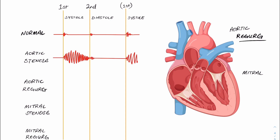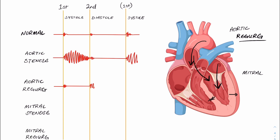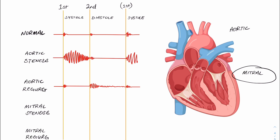Moving on to aortic regurgitation. During systole, the mitral valve will snap shut as normal and the aortic valve will be open to allow blood through to the aorta as normal — so the first heart sound is all good. However, during diastole, when the ventricle is relaxing, it should be the snapping shut of the aortic valve that causes the second heart sound. Because this aortic valve is regurgitating and allowing backflow, we would expect to hear an abnormal second heart sound — blood trickling through this incompetent valve, representing non-unidirectional blood flow.